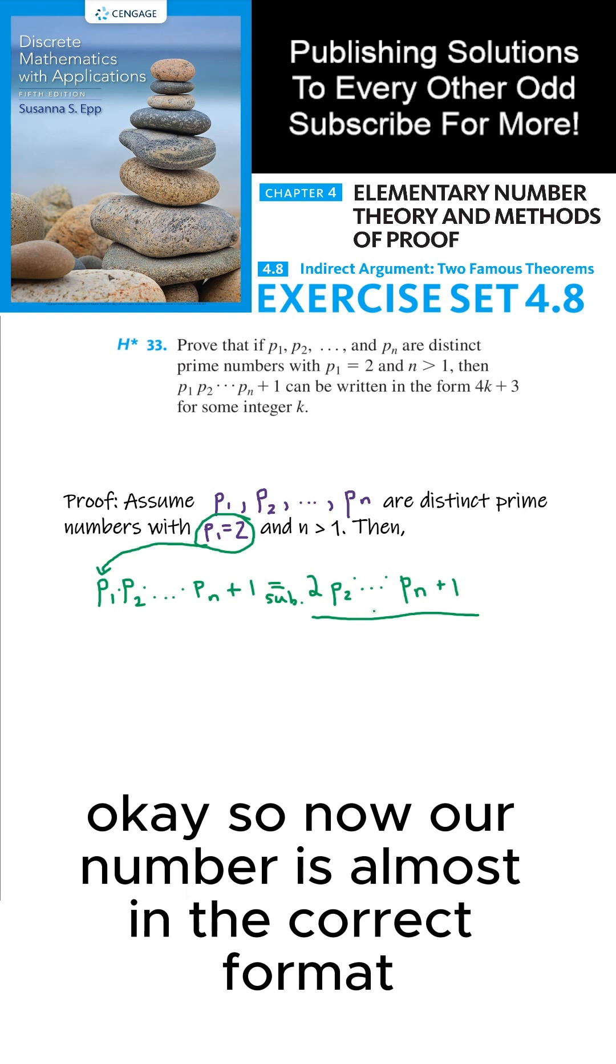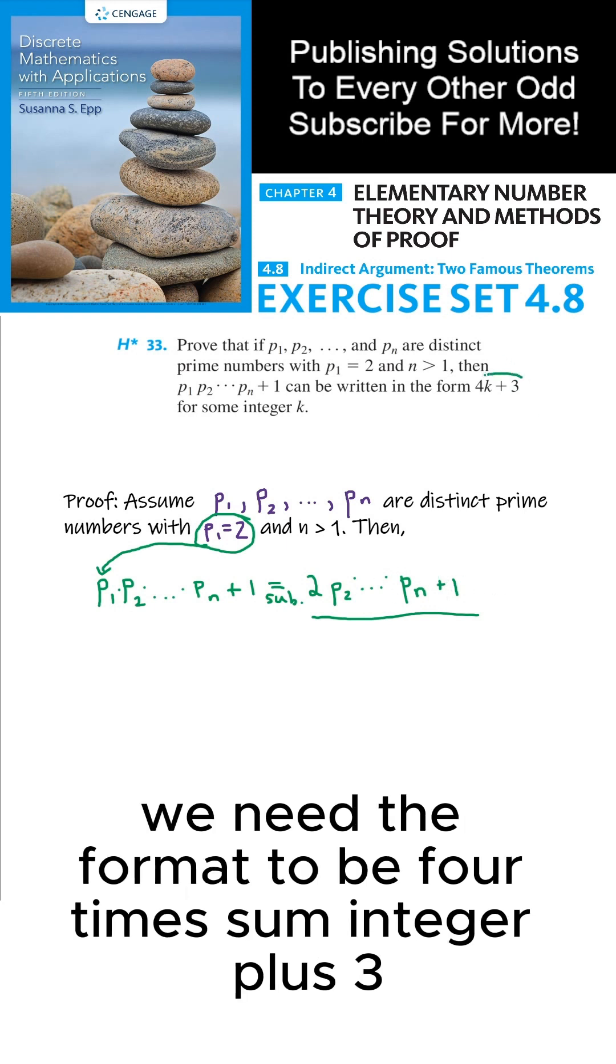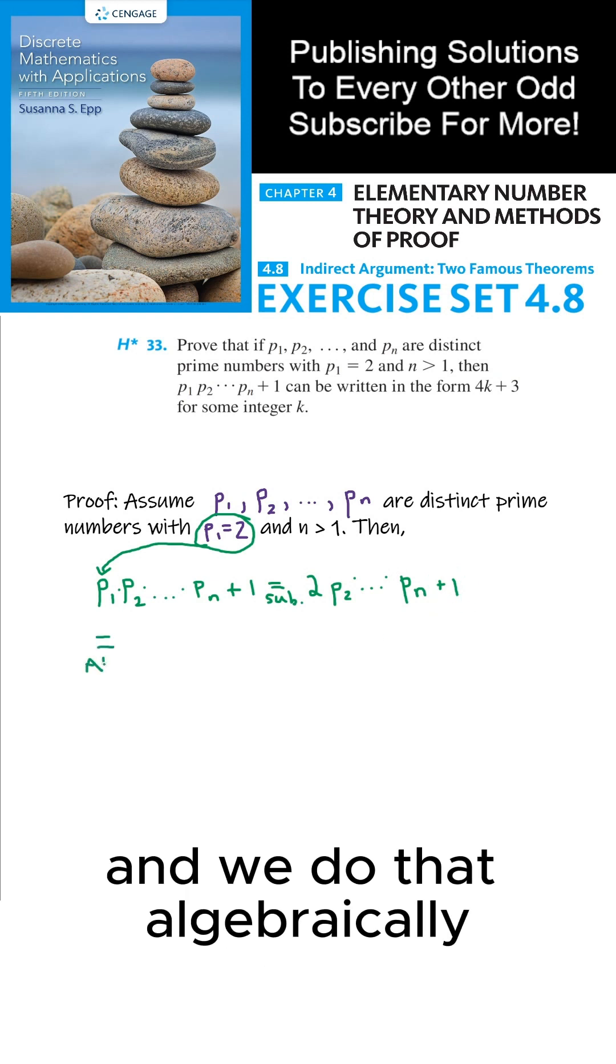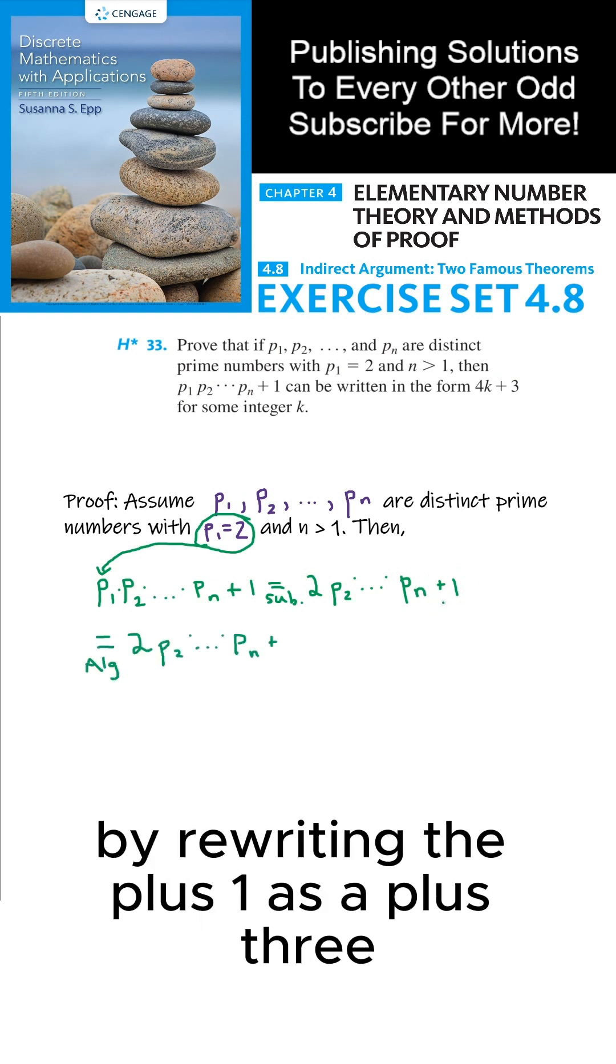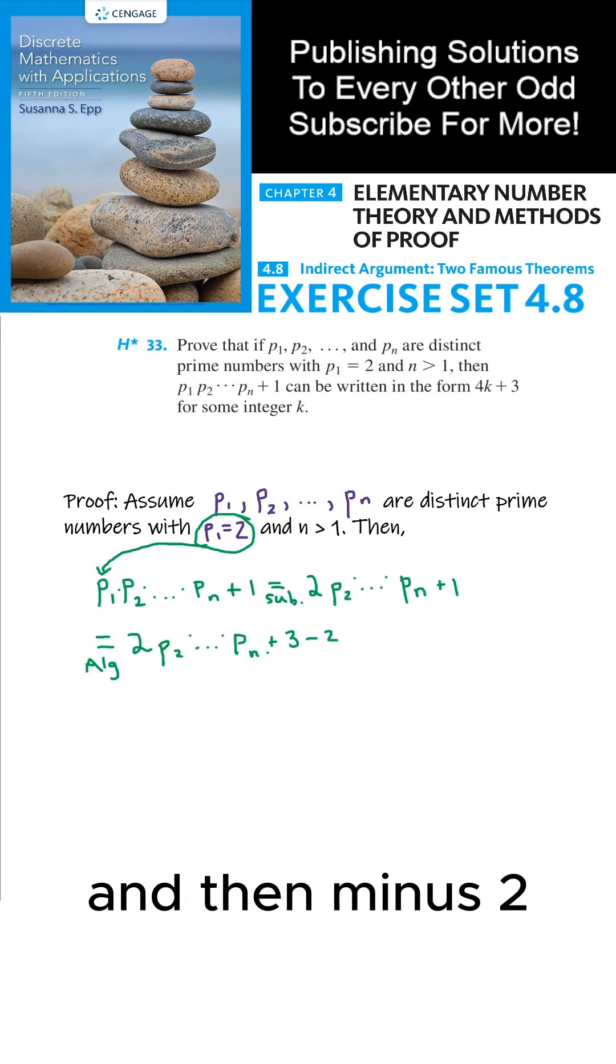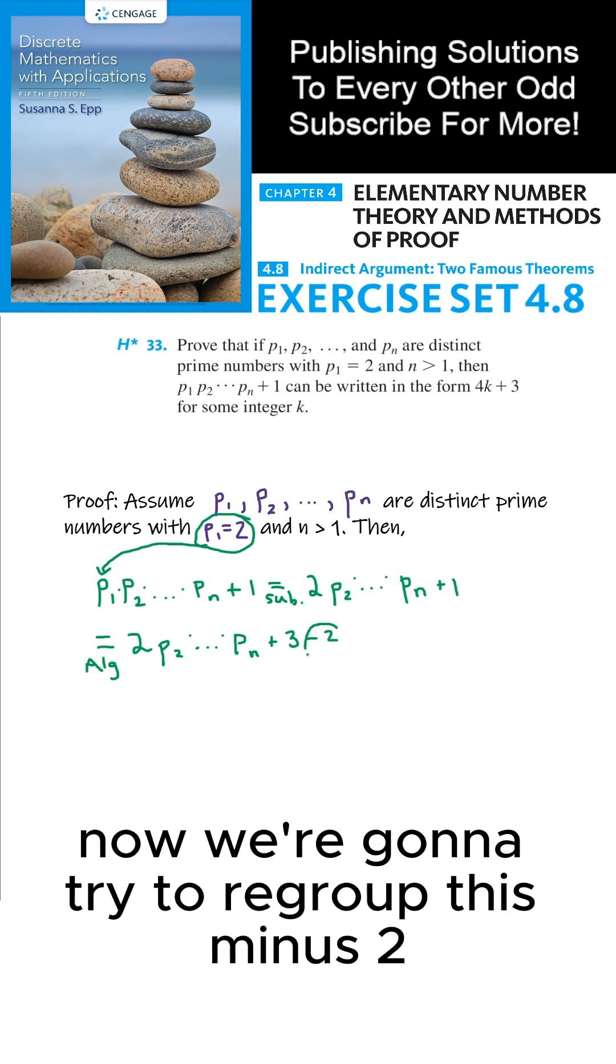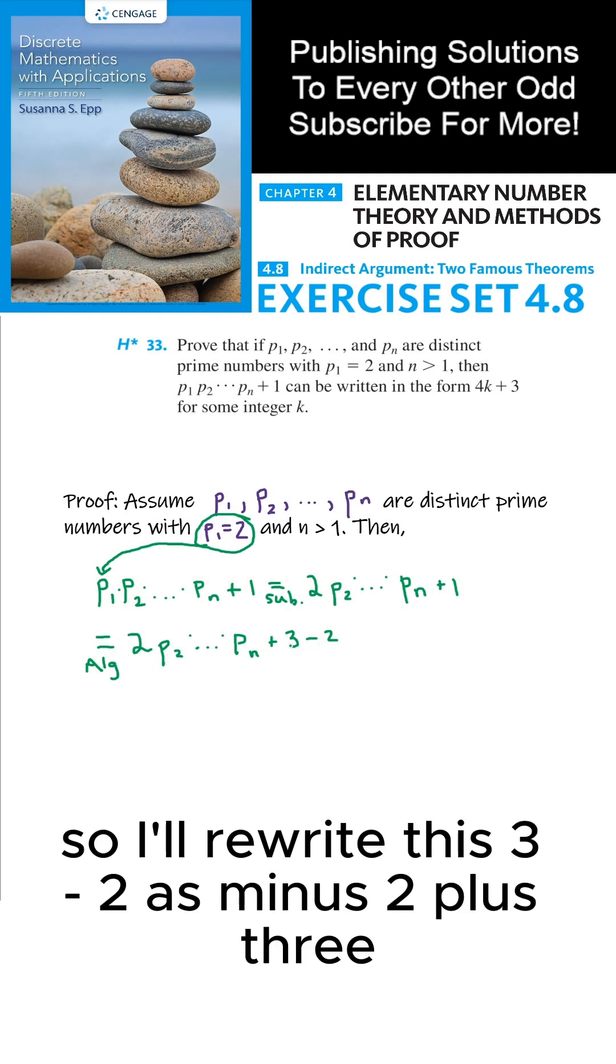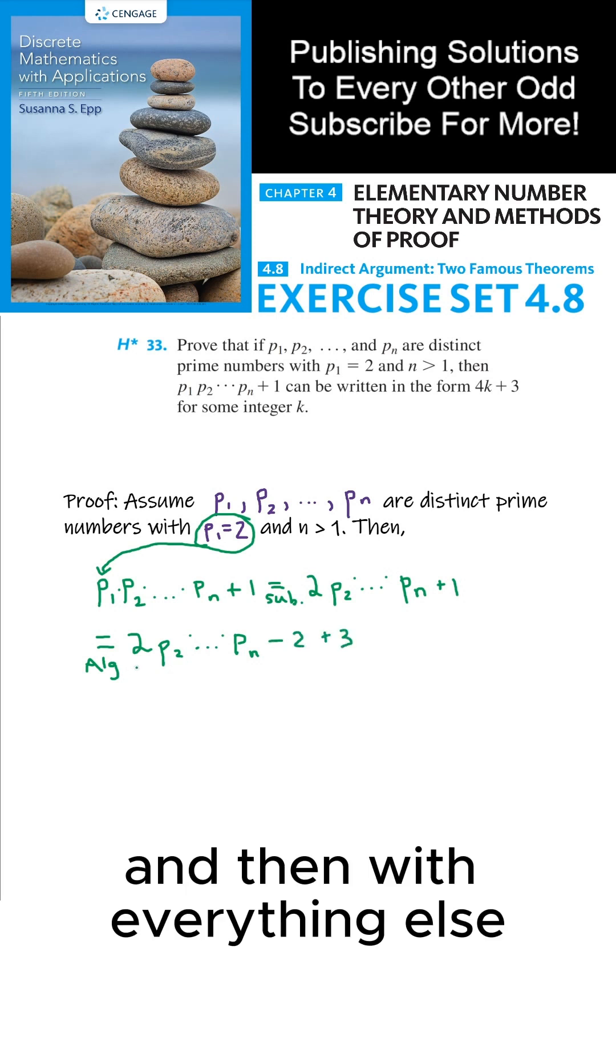Okay, so now our number is almost in the correct format. We need the format to be 4 times some integer plus 3. The next thing we can do is change this plus 1 into a plus 3 by force, and we do that algebraically by rewriting the plus 1 as a plus 3 and then minus 2. That's how we can get our plus 3 here. Now, we're going to try to regroup this minus 2 with everything else here, so I'll rewrite this 3 minus 2 as minus 2 plus 3.